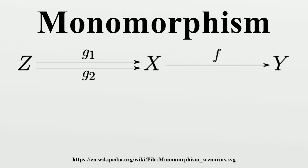In the context of abstract algebra or universal algebra, a monomorphism is an injective homomorphism. A monomorphism from X to Y is often denoted with the notation.